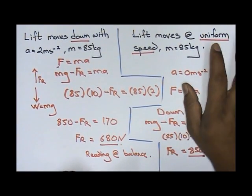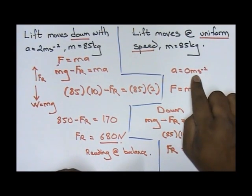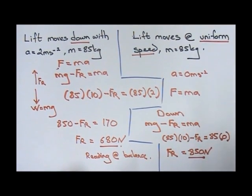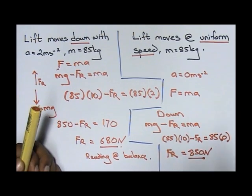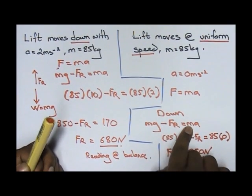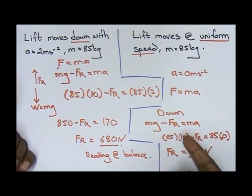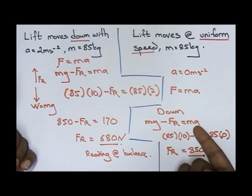The reason why it's the same is because if it's moving at uniform speed, acceleration is zero. As you go down and you go up, if it's going up, it's FR minus mg equals to ma, which is the same thing because when you take m times a you will still get zero.